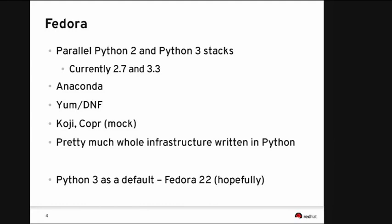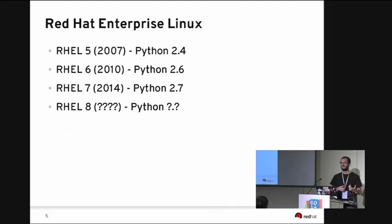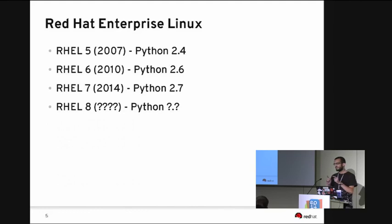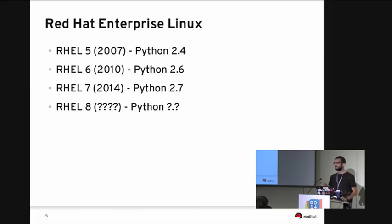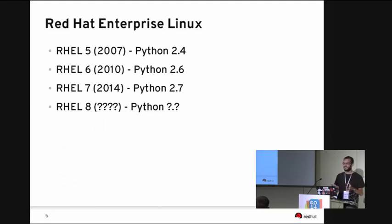Fedora is a rapidly moving Linux distribution — we make releases every half a year. Red Hat Enterprise Linux, made out of Fedora, is quite the opposite: it moves slow, has a very long support cycle, and is very stable and secure. That can be a good thing if you have an application that you need to run for 10 or 15 years. But we've also come up with a mechanism to allow people to run this super stable system but also go forward, follow upstream, and get new versions of Python and databases.